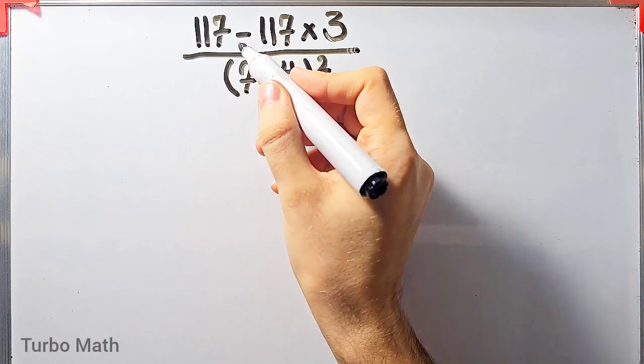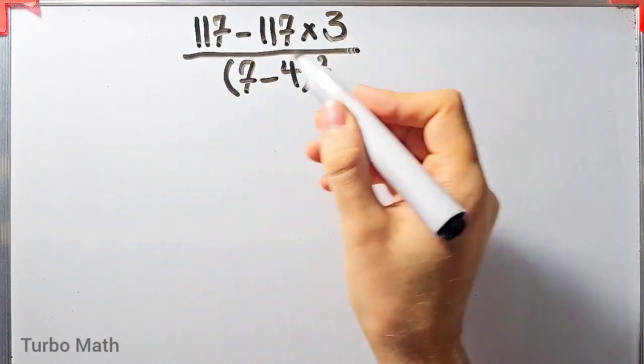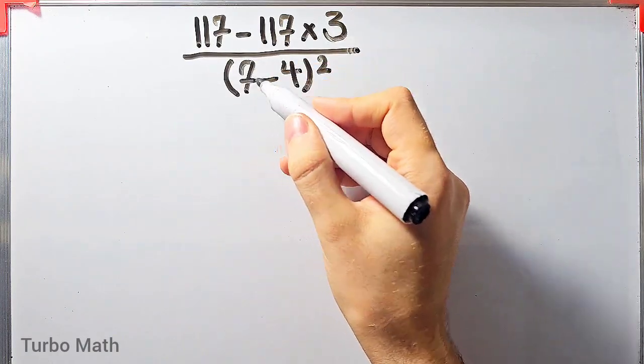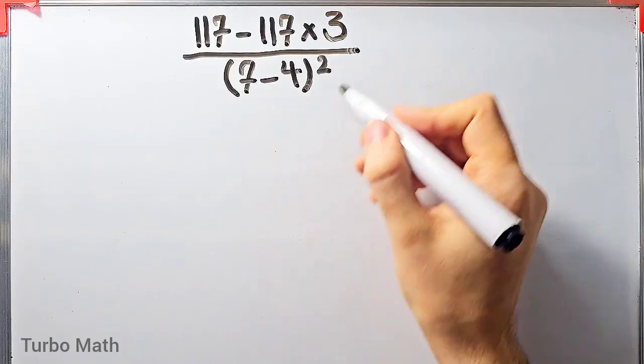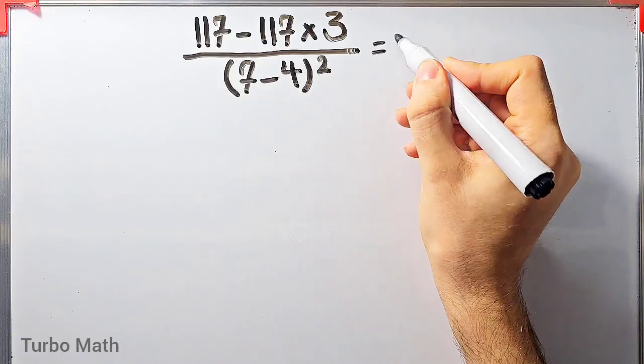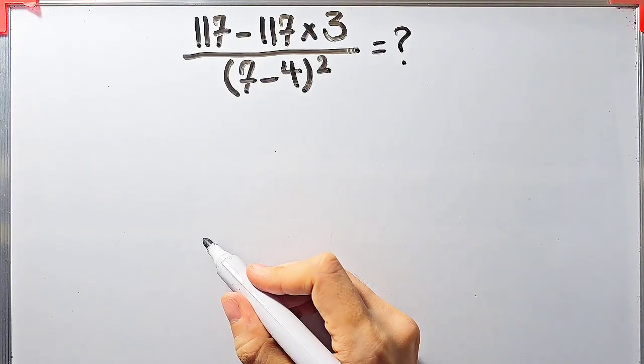117 minus 117 times 3, then divided by open parentheses 7 minus 4 closed parentheses, then all of them to the power of 2. What is the answer of this question?